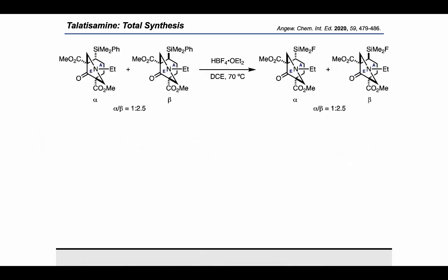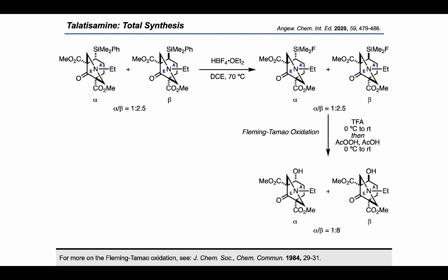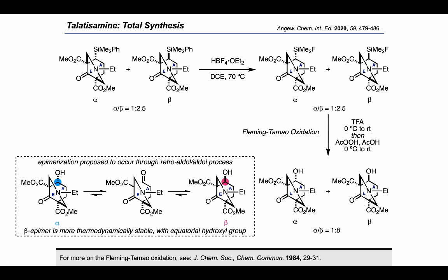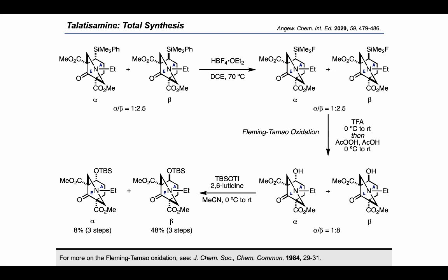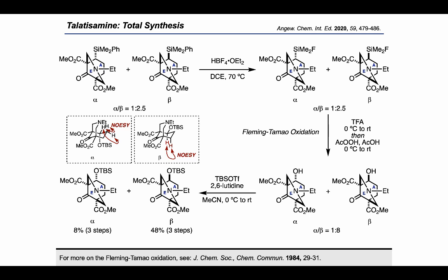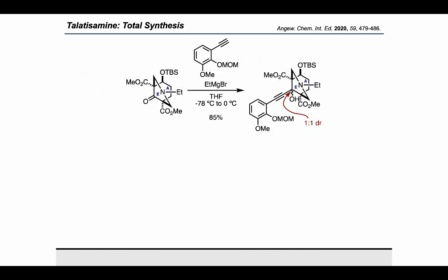The diastereomeric mixture of alpha and beta (down and up) silanes could be treated with ethereal HBF4, followed by TFA, which was used to protonate and thereby protect the tertiary amine, and then peracetic acid to execute a Fleming-Tamao sequence, resulting in a diastereomeric mixture heavily enriched in favor of the more thermodynamically favorable beta-diastereomer. This diastereo-enrichment was proposed to occur through a retro-aldol/aldol process once the hydroxyl group was installed. This diastereomeric mixture could be TBS-protected to afford another mixture of diastereomers, assigned using NOESY correlations. The ketone could then be treated with an appropriately substituted phenylacetylene pronucleophile in combination with ethylmagnesium bromide to carry out an alkynylation in a non-diastereoselective fashion.